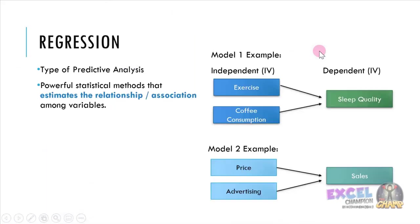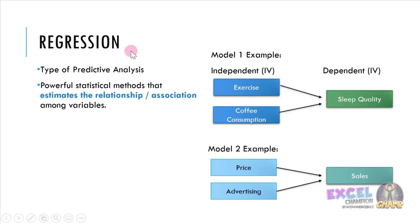Regression is a type of predictive analysis because we want to predict one set of variables to another set of variables. We consider regression as one of the powerful statistical methods because regression helps to estimate the relationship or association among these variables.